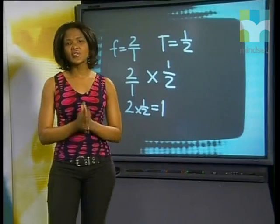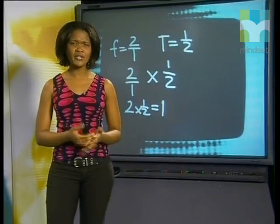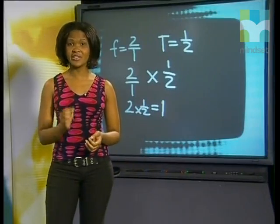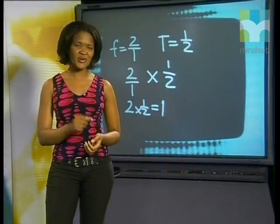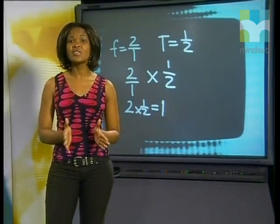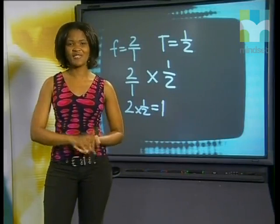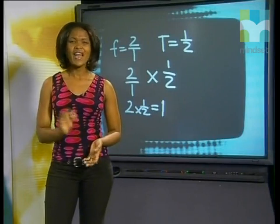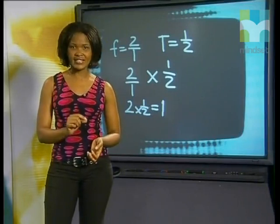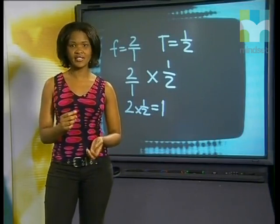Can you see what this relationship means? What would happen to the period if the frequency increased by five times from two Hertz to ten Hertz? Well, the period would decrease by five times from 0.5 seconds to 0.1 second. So as the one variable increases, the other variable decreases by the same amount.